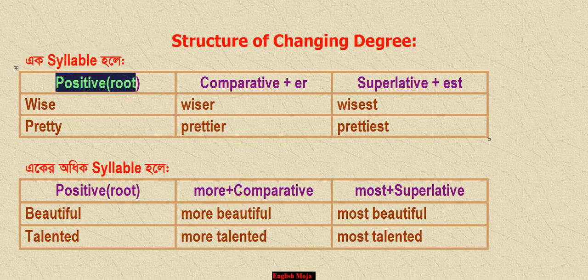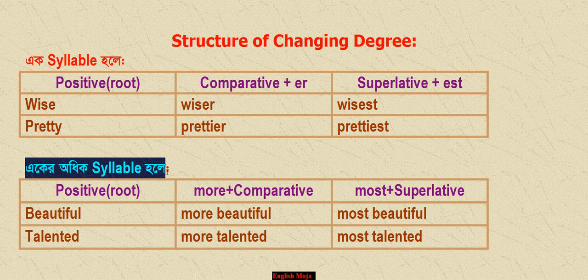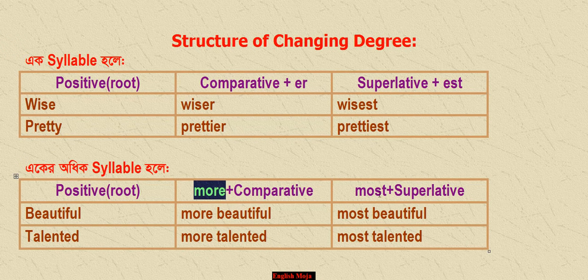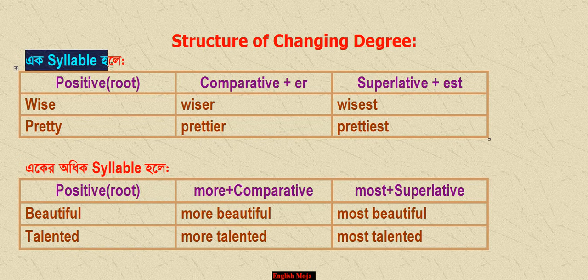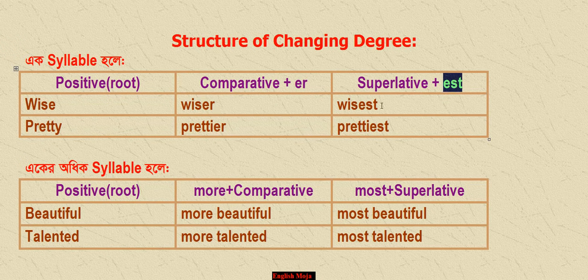The adjective is at the basic level — this is positive. We will add 'ER' for comparative degree and 'EST' for superlative degree. For example, the adjective is 'wise.' In the comparative degree, wise becomes 'wiser' — we add E-R. In the superlative degree, wise becomes 'wisest' — we add E-S-T.